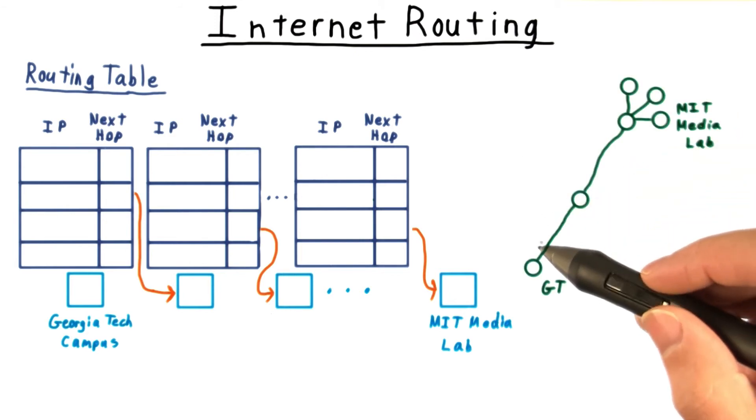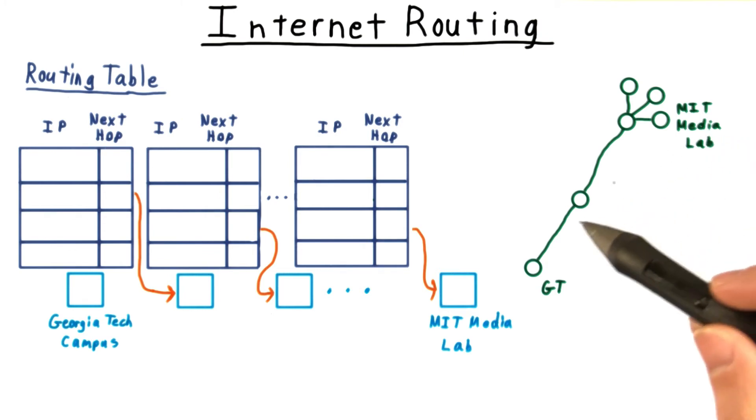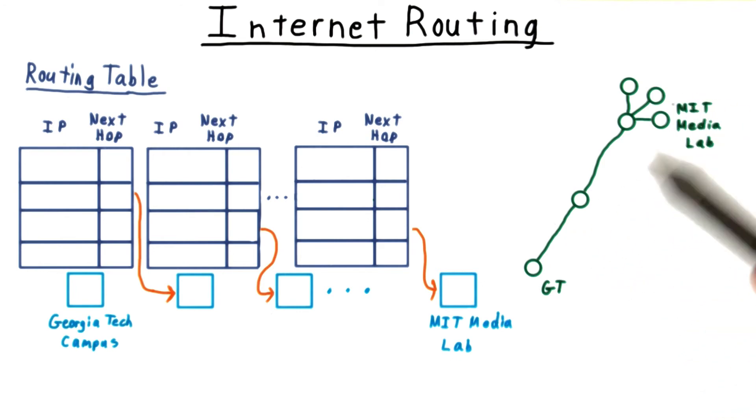For instance, consider traffic between Georgia Tech and MIT. As mentioned earlier, MIT owns the 18.0.0 slash 8 address space, meaning that every IP that starts with 18 needs to go to Boston and the MIT campus.